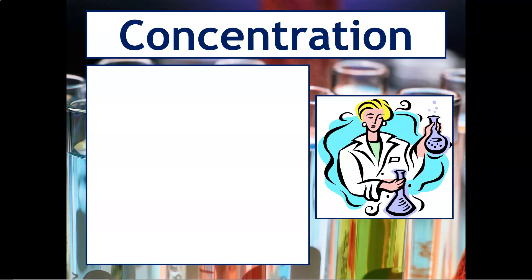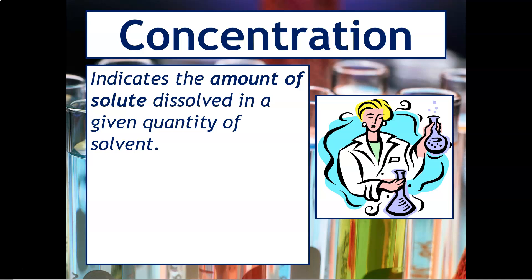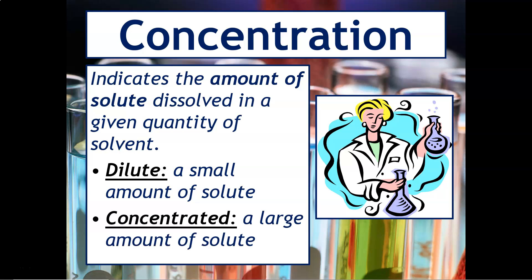There's one last thing we need to talk about and that's called concentration. Concentration indicates the amount of solute dissolved in a given quantity of solvent. When we talk about concentration, we usually use two terms. The first one is dilute, which indicates that there's a small amount of solute. And then concentrated is usually referred to as a large amount of solute that is dissolved. So those are two terms that we'll refer to, but they're very qualitative in nature. They don't really give us any indication of how much of each substance we have, and so that is what we're going to explore in our next lesson.